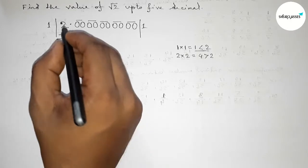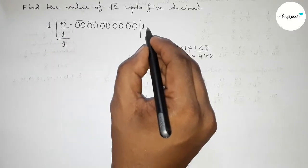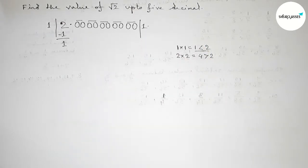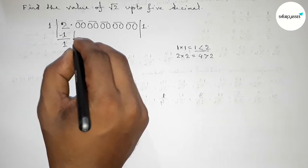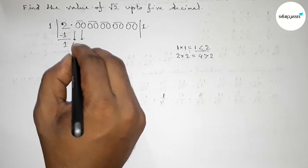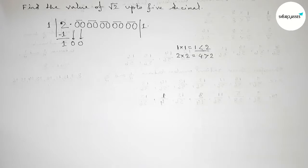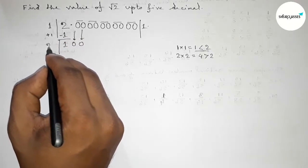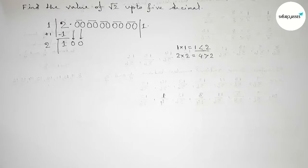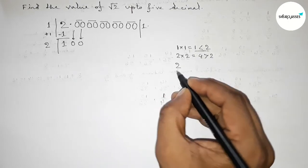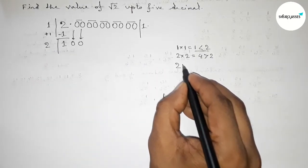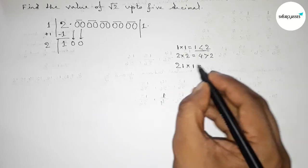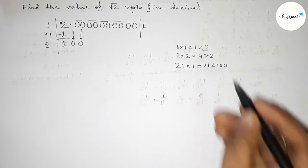Now write down the decimal point here and bring down the first pair of zeros, giving us 100. Draw a division line. We add the last quotient digit 1 to itself: 1+1=2. Now we must choose a digit to place beside 2 and multiply by that digit. If we put 1, then 21×1=21, which is less than 100.